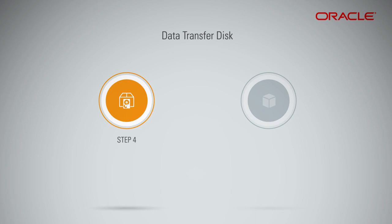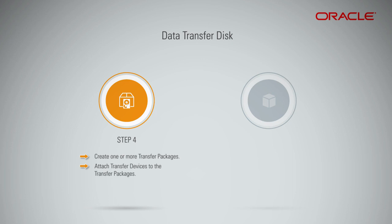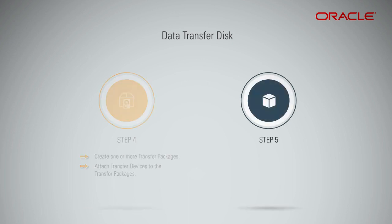Step 4 — create one or more transfer packages using the console or Data Transfer Utility, and attach the transfer devices to the transfer packages using the console or Data Transfer Utility. Step 5 — ship the transfer package using an approved shipping vendor to your nearest transfer site.